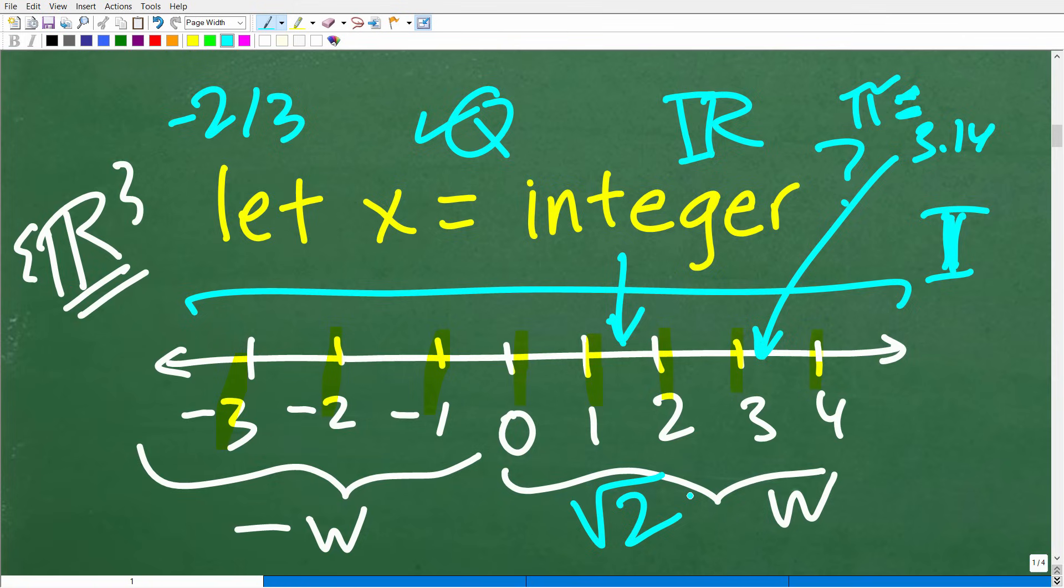Just a quick overview of the real numbers and specifically the integers, because you might come across a problem that uses the word whole number or counting number, natural number, rational number. Got to understand what these math terms are.